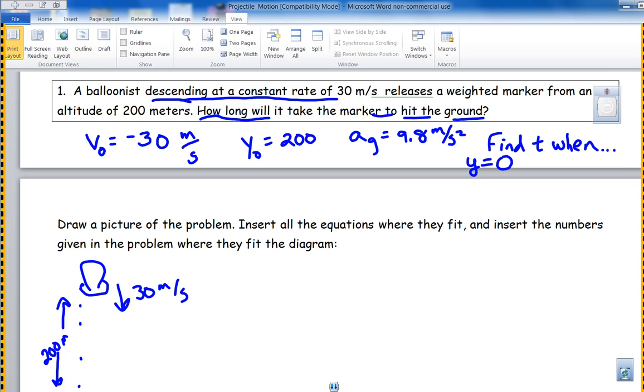This is part three of the projectile motion packet. I was in the midst of explaining the balloonist problem and I said well solve it, so we've got our initial values.